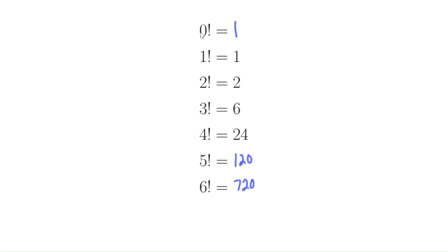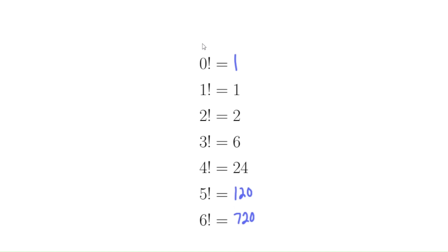To get back to 0 factorial, we would divide by 1, and 1 divided by 1 is 1. So that's why 0 factorial is defined to be 1 — it's a very natural definition. What about negative 1 factorial? We would have to divide by 0, and 1 divided by 0 is undefined. So negative 1 factorial is undefined. We are going to extend the factorial function beyond integers to decimals and even negative numbers, but it won't extend to negative integers like negative 1, negative 2, and so forth.